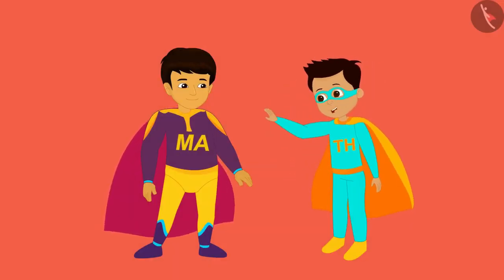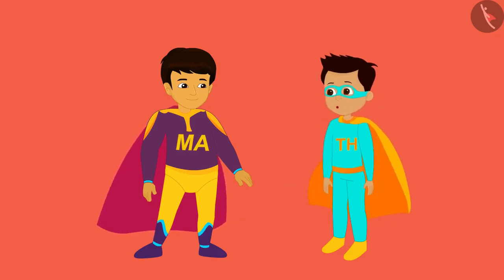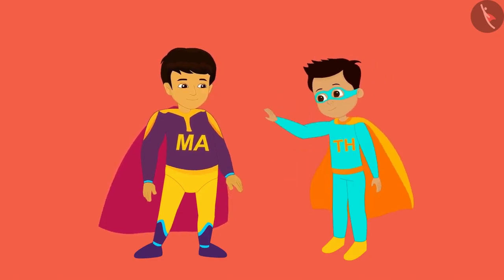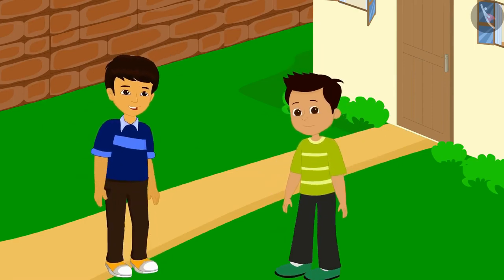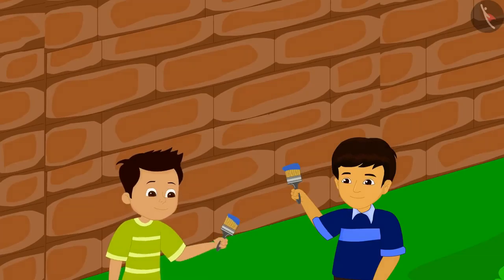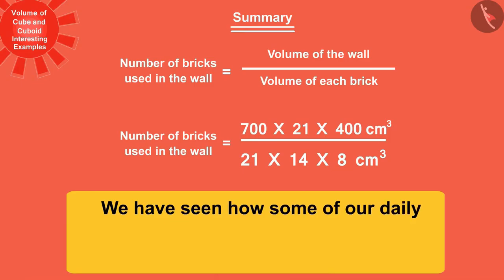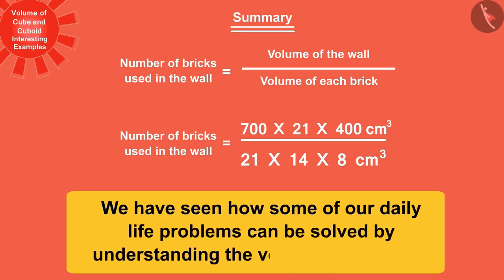Yes! Let us now return to our world and paint this wall with a beautiful color, due to which this wall will start to look more beautiful. The two friends together painted the wall in a beautiful blue color. With this example, we have seen how some of our daily life problems can be solved by understanding the volume of a cuboid.